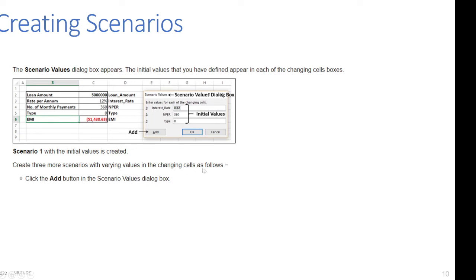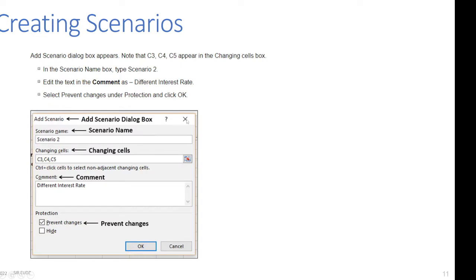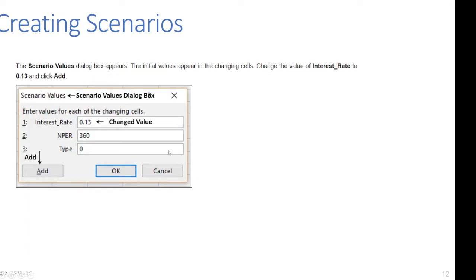Now create three more scenarios with varying values. Click the Add button in the Scenario Values dialog box. The Add Scenario dialog box appears — note that C3, C4, C5 appear again in the changing cell box. Type 'Scenario 2' in the Scenario Name box, edit the comment as 'Different interest rate', select 'Prevent Changes' under Protection, and click OK. The Scenario Values dialog box appears with the initial values; change the interest rate to 0.13, then click Add.